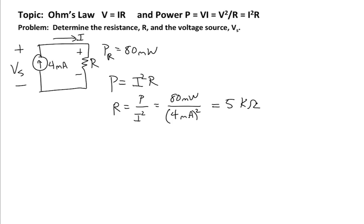So that solves for our resistance. The next thing we need to find is the voltage associated with the current source. So it's the source voltage across the current source.